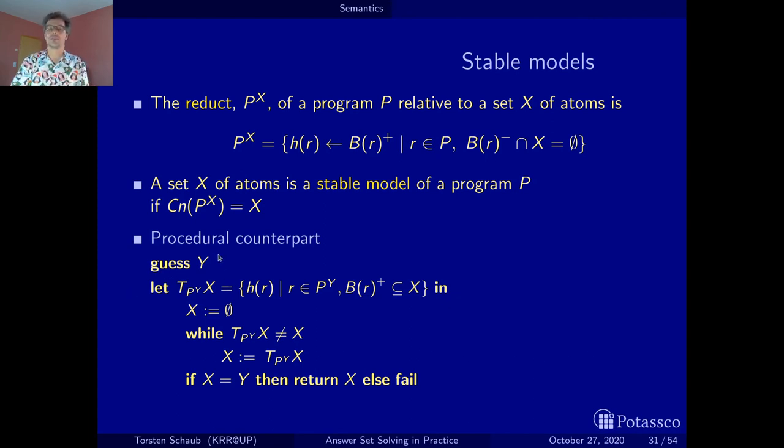Let's say our Oracle gave us a solution candidate. We use here the reduct of the program with respect to the guess, and this is now our original T_P operator, which works on positive logic programs and only evaluates the positive body. The T_P operator is just the same, just that here we now have the reduct, and wherever we apply the operator, we apply it with respect to the reduct. Then we iterate over the x until we get a fixed point of the T_P operator. And if what we have produced by our loop is the same as we provided as a guess at the beginning, then great.